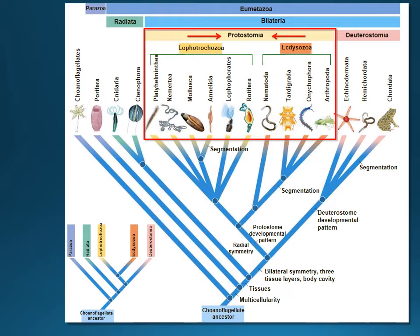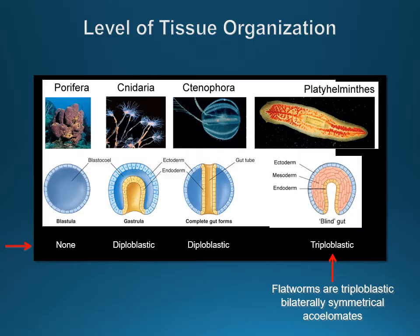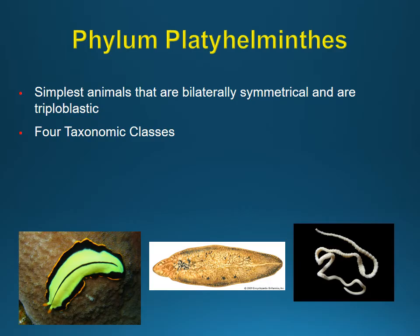We're moving on and we have our first triploblast. It's got a mesoderm. No coelom though - no body cavity - so they're very flat organisms. It's also a blind gut, which means it does not go all the way through, meaning one hole serves as both mouth and anus. But it does have the three types of tissues. These are pretty simple organisms.